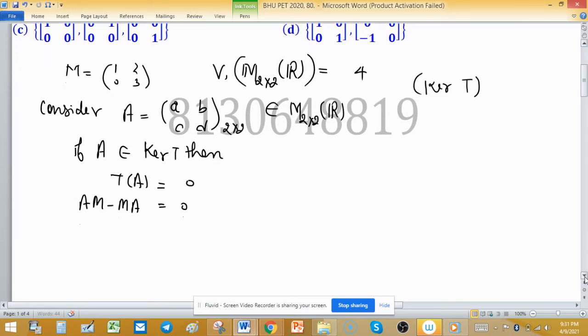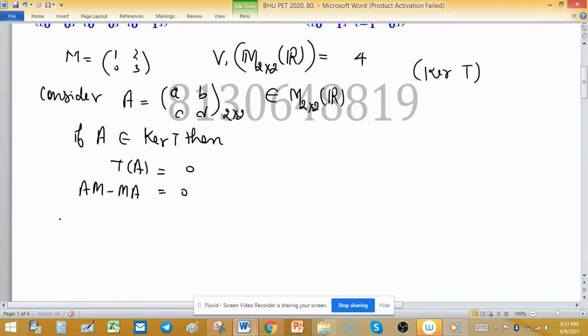Now consider A multiply with M. A is the matrix with entries A, B, C, D, and matrix M is 1, 0, 2, 3, minus matrix M times matrix A equals the 0 matrix of the correct size, 2 by 2.